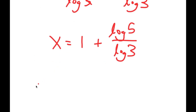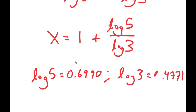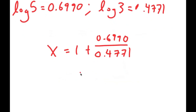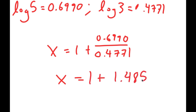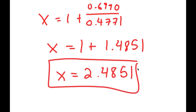Now, log 5 is equal to 0.6990, and log 3 is equal to 0.4771. So this is going to equal 1 plus 0.6990 over 0.4771. Now, 0.6990 over 0.4771 is equal to 1.4851, and 1 plus 1.4851 is equal to 2.4851. So this is my value of x.